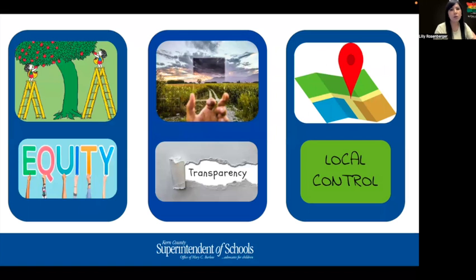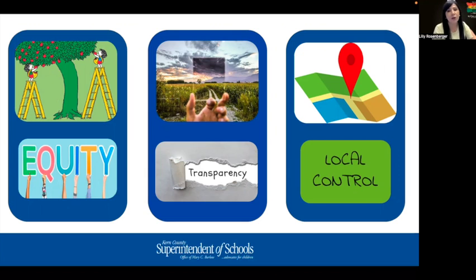In our first session, we shared this slide and want to quickly review California's framework for accountability and continuous improvement. This framework is centered on the three principles of equity, transparency, and local control. These principles will continue to guide our work as we explore how to strengthen LCAPs to better reflect the state's intent under the new accountability system and improvement efforts focused on your local needs.